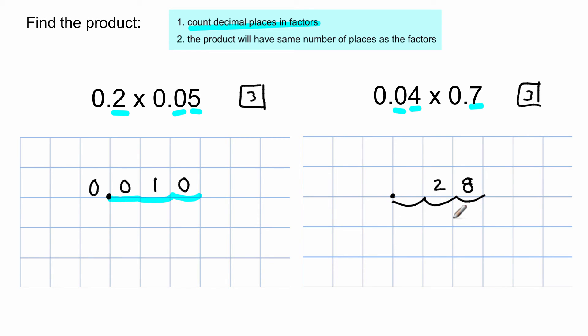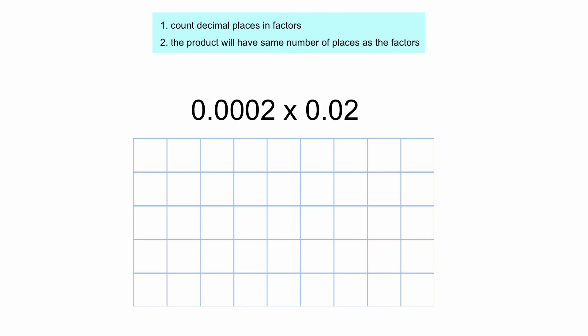Now, what do I write in the blanks? Zeros. And a zero goes there, and that's the answer. So 0.04 times 0.7 is 0.028.